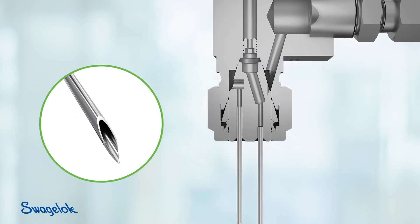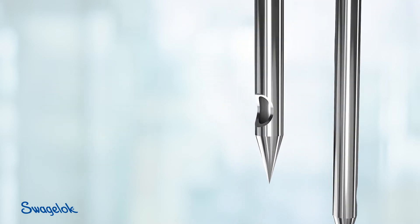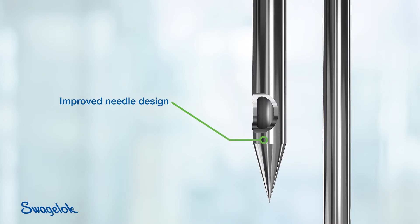Most grab sampling valves use a lancet point needle, which can core the septum, resulting in clogged needles or leaking sample bottles. Our pencil point needle assembly is swaged or welded closed and ground to a point with a side discharge hole so it pierces without causing septum damage.